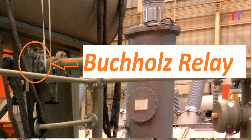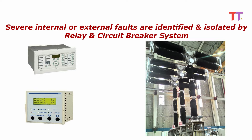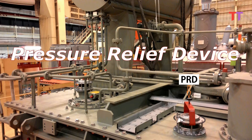Buchholz relay gives an alarm and subsequently trips the transformer in case of gas accumulation due to incipient fault. Also, DGA — dissolved gas analysis — of transformer oil is done periodically to identify any gas formation or degradation of oil. Severe internal or external faults are identified and isolated by relays. Even if all these systems fail, there is a PRD installed on the transformer tank, called as pressure relief device.